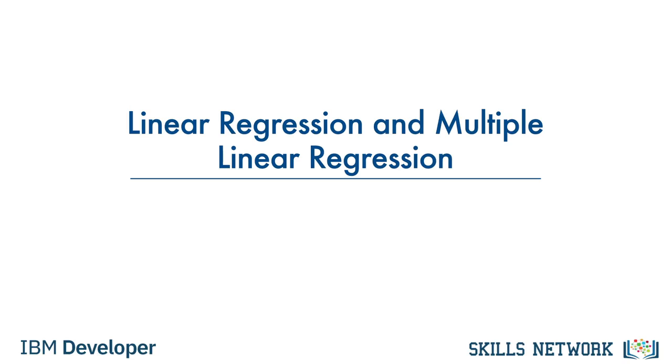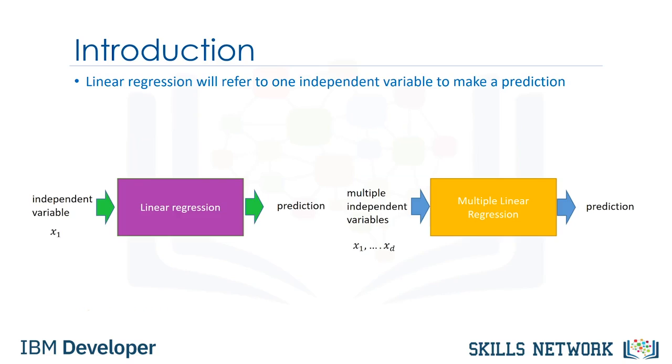In this video, we'll be talking about simple linear regression and multiple linear regression. Linear regression will refer to one independent variable to make a prediction. Multiple linear regression will refer to multiple independent variables to make a prediction.